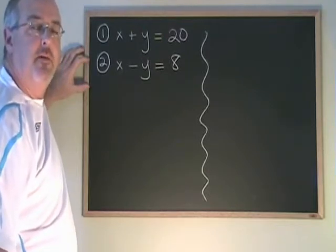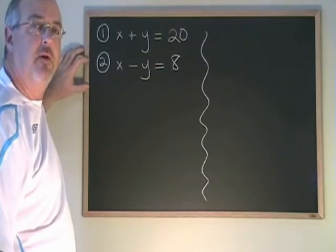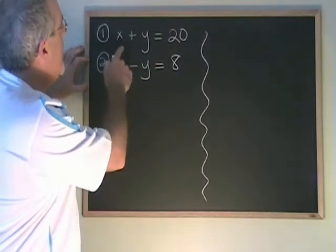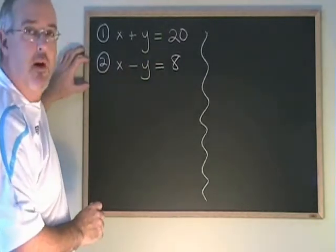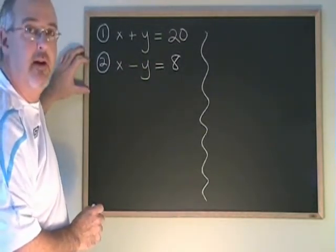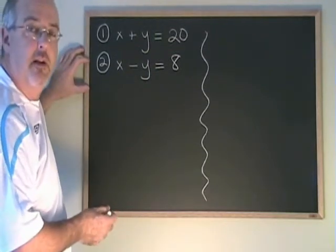Elimination is an algebra method that we use to find the point of intersection of two straight lines. We have equation 1, x plus y equals 20, and equation 2, x minus y equals 8. This is a very simple example that makes it easy to see how elimination works.